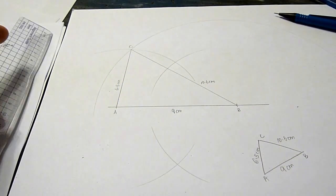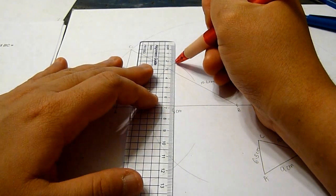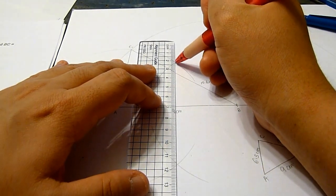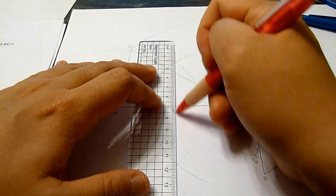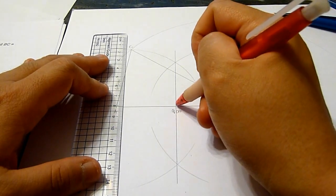Now, I will join the two intersection points together. This is the perpendicular bisector.